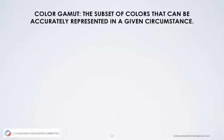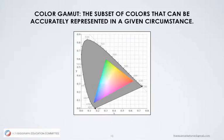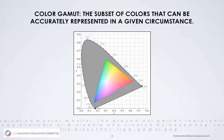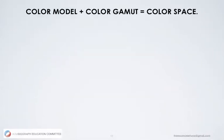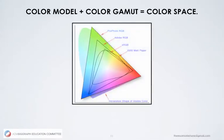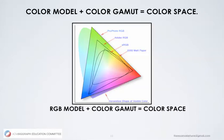Color gamut is the subset of colors that can be accurately represented in a given circumstance. We will look at a horseshoe — the gray part of our diagram inside a triangle. This triangle is the color gamut of a typical computer monitor. The grayed-out portion, or horseshoe, represents the entire range of color. Each output device or display device has its own color gamut within this horseshoe range. So we have a color gamut and a color model.